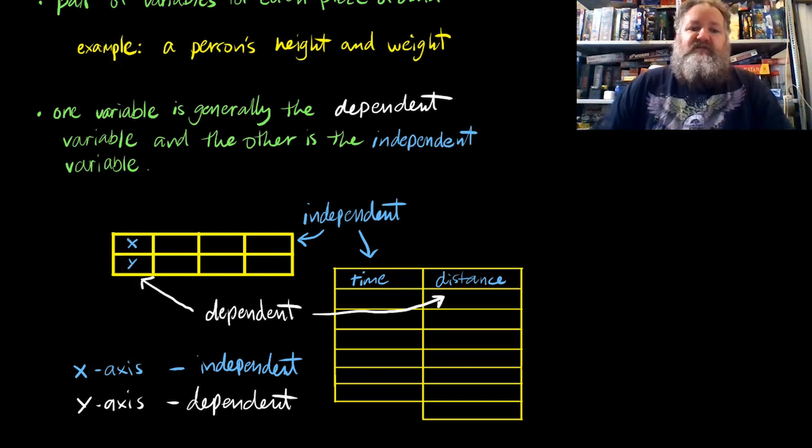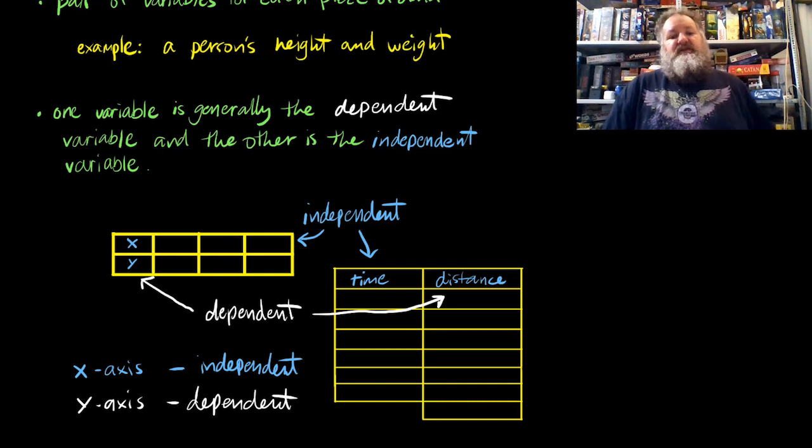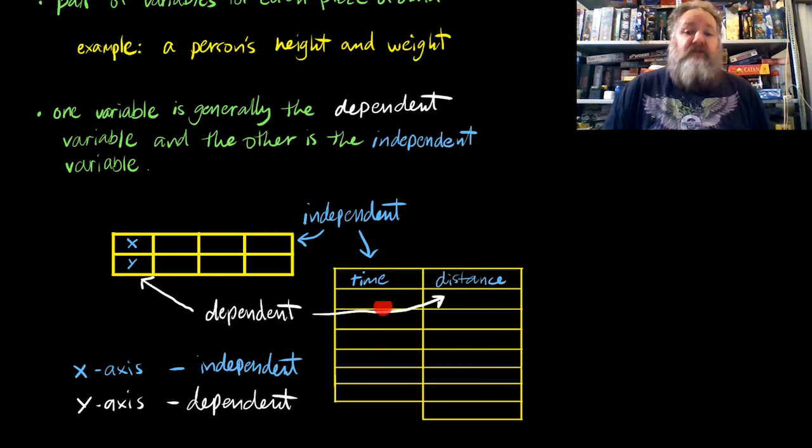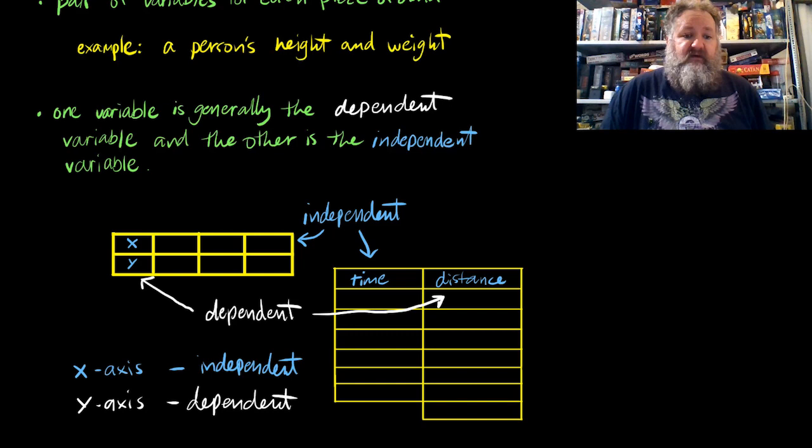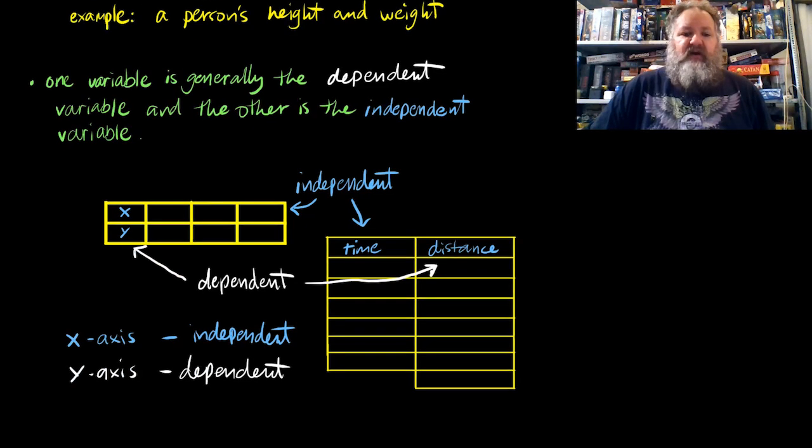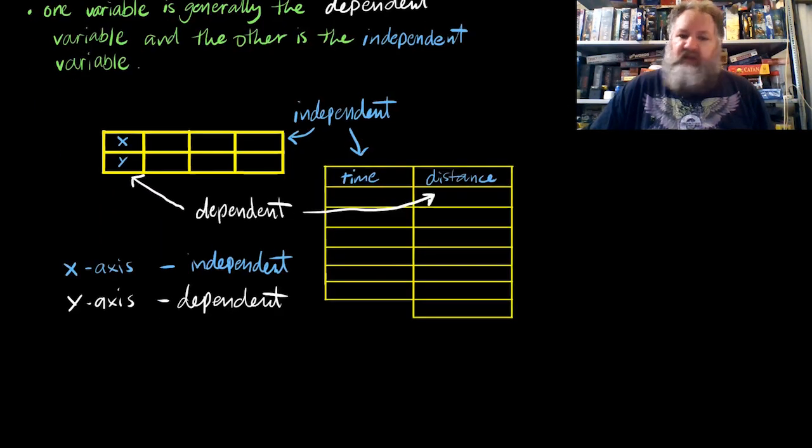The top row is the independent. If our table of information is in columns like this one over here, it'll be the first column that is our independent, which obviously means that the second row and the second column are the dependent. As we're graphing things, you will see that the x-axis will show the independent variable and the y-axis will show the dependent variable.